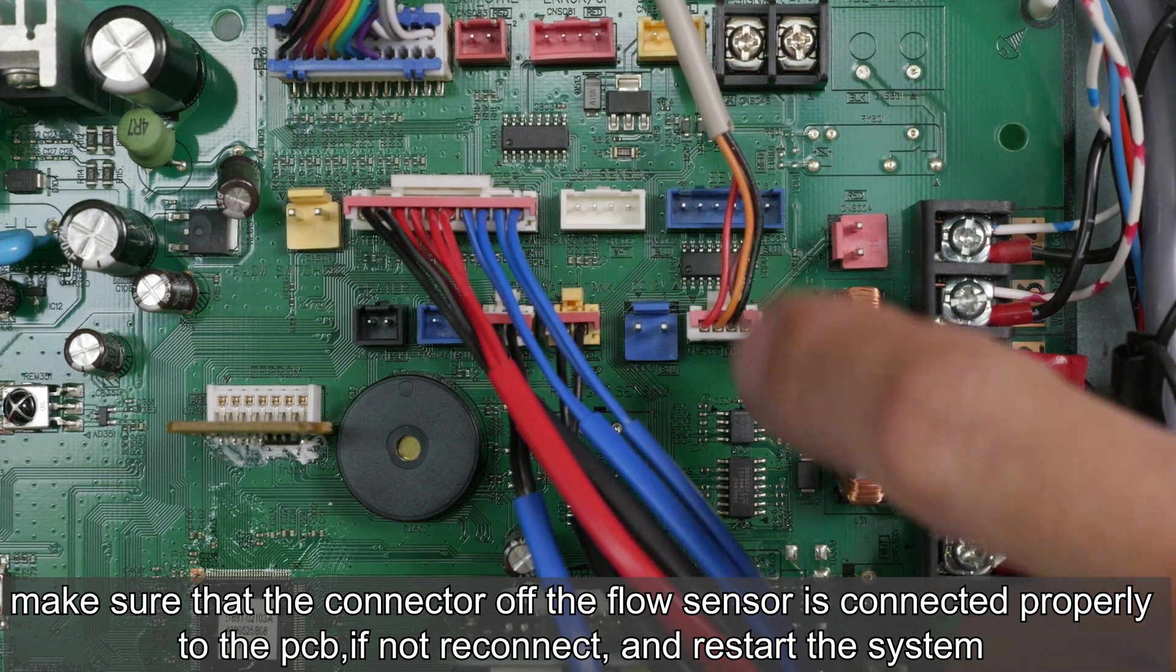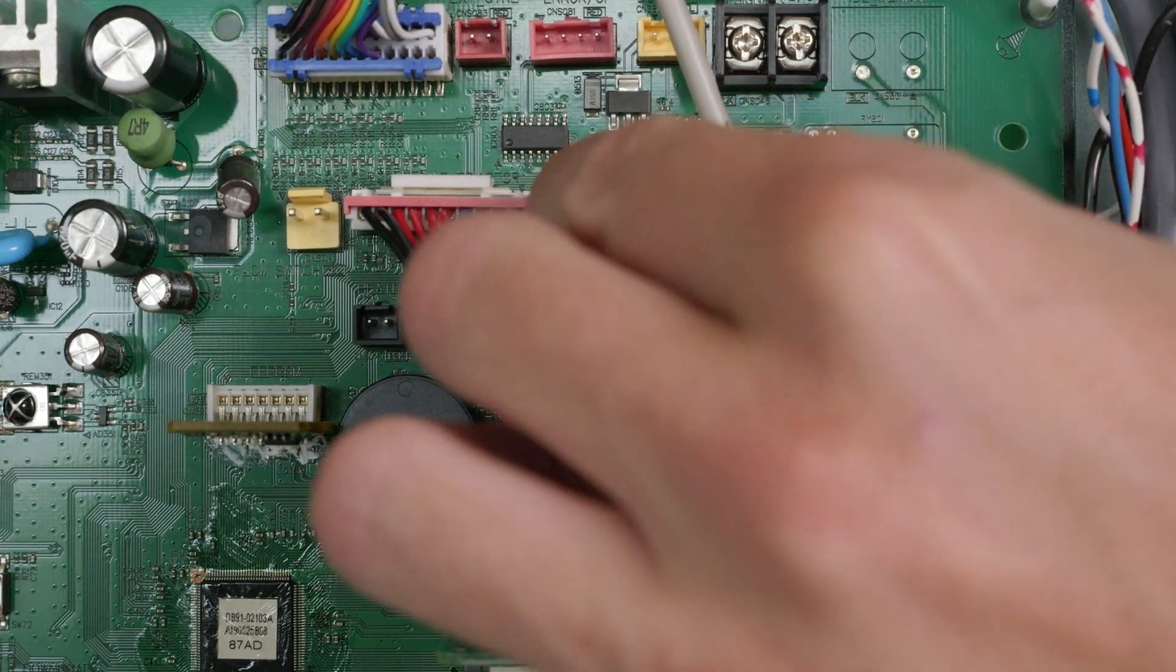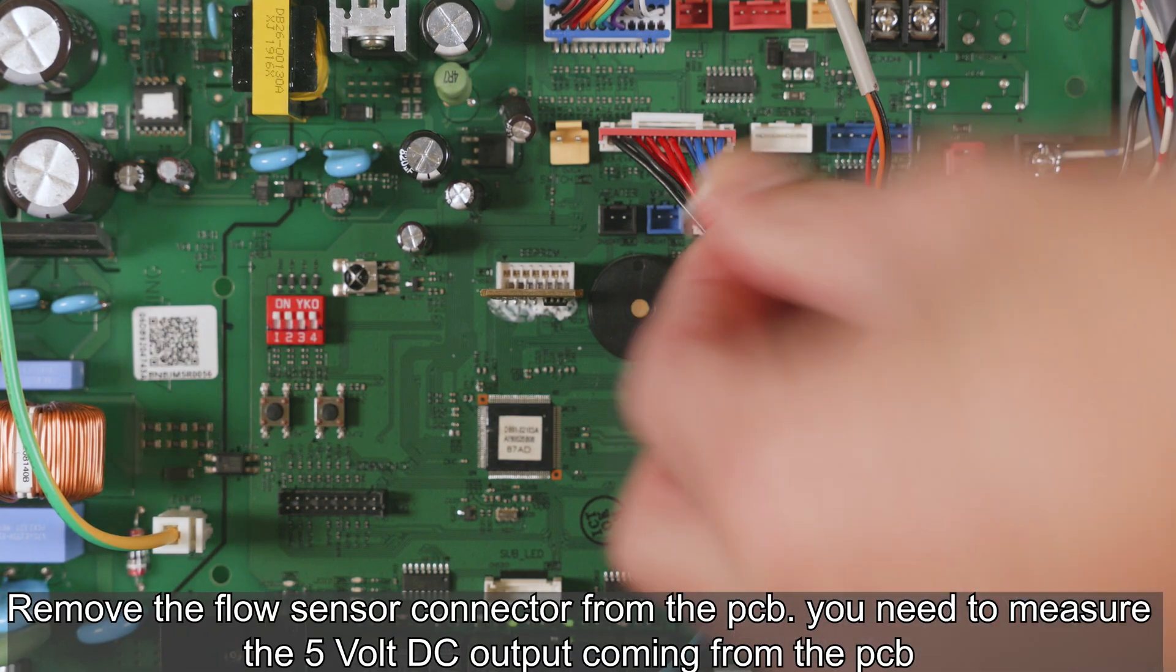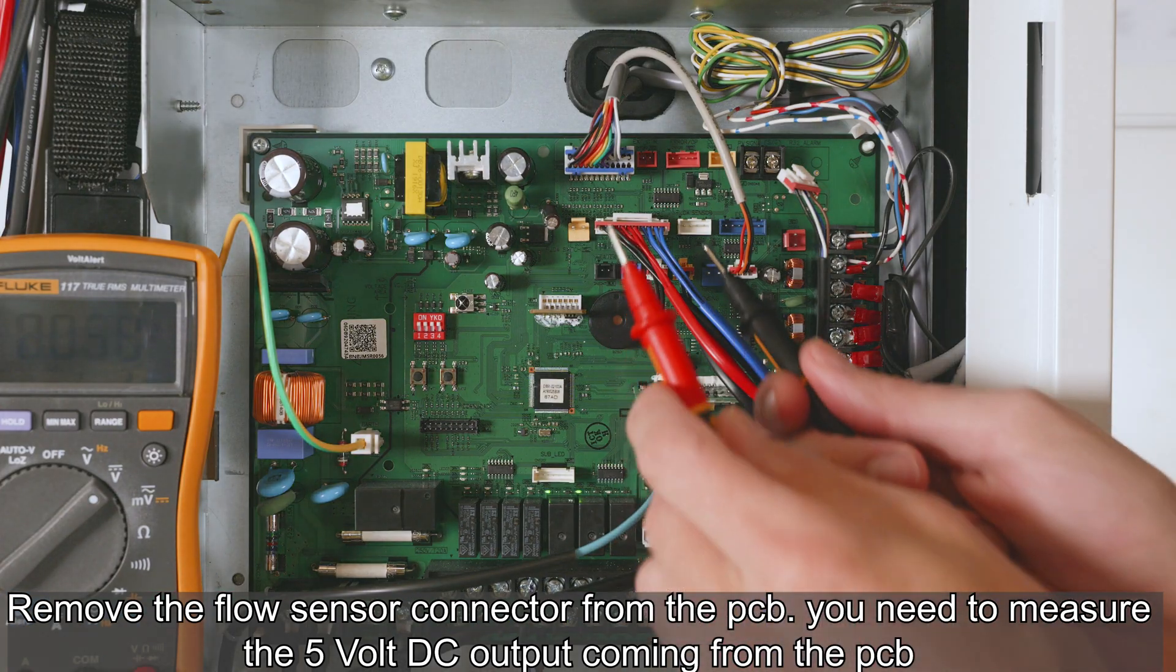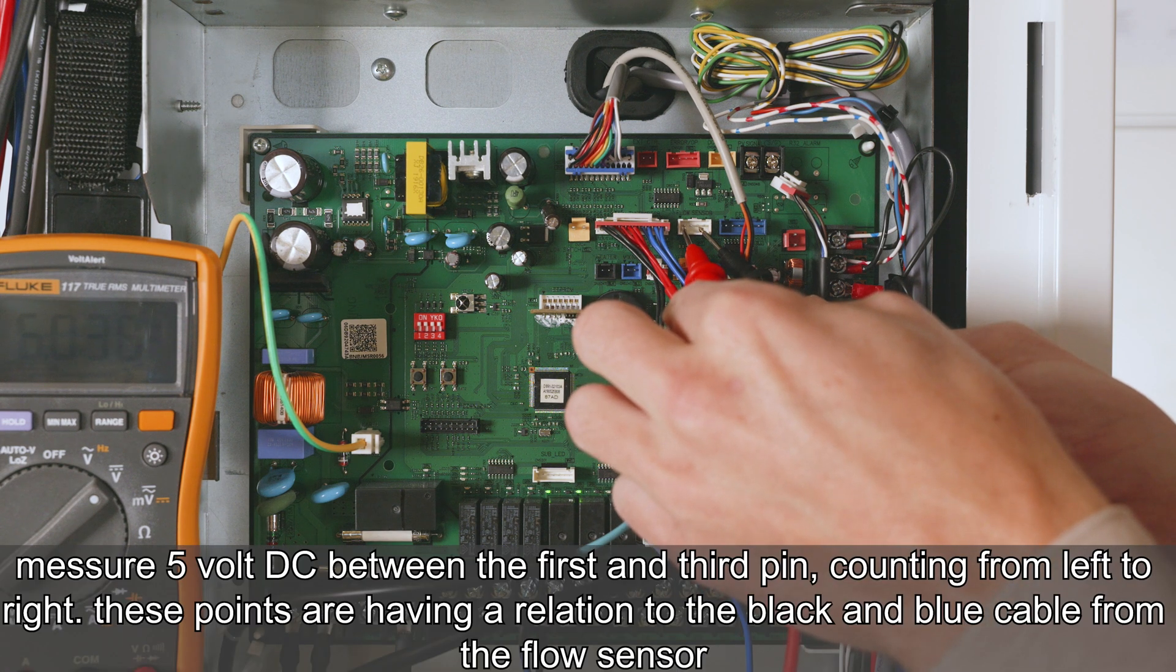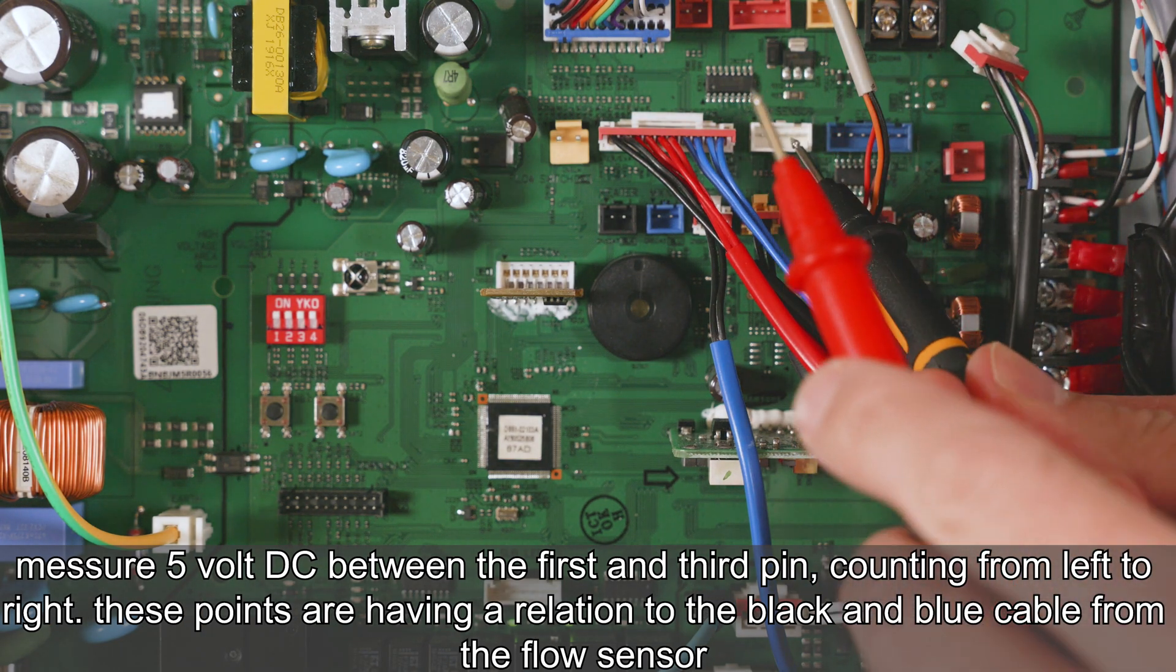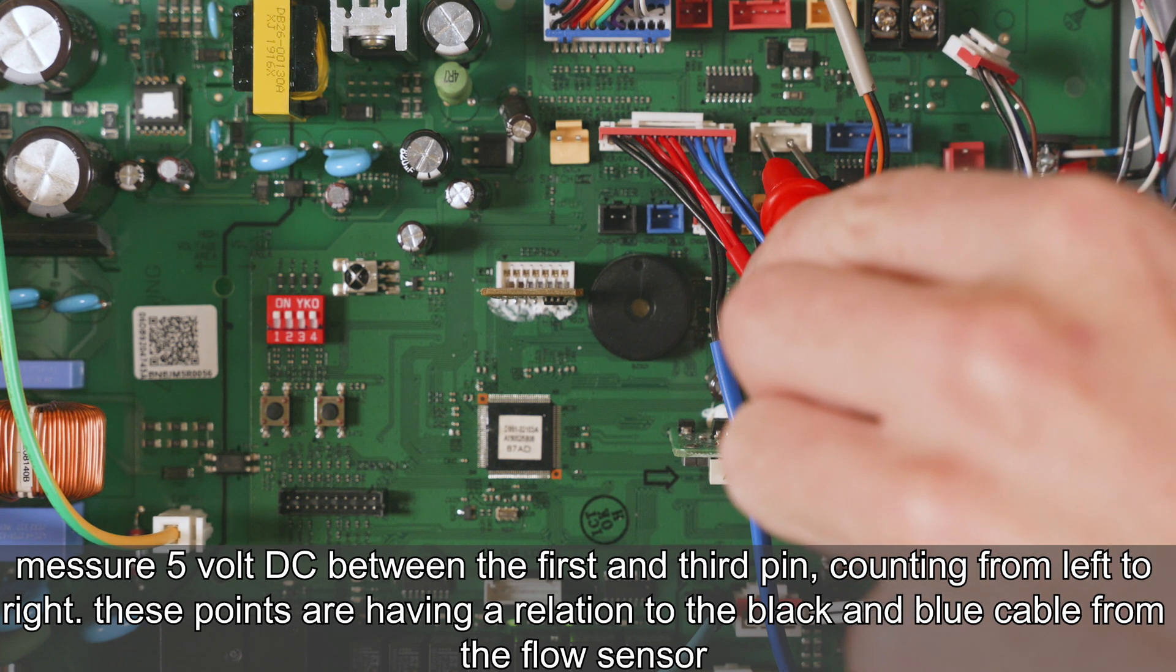Remove the flow sensor connector from the PCB. You need to measure the 5 volt DC output coming from the PCB. Measure 5 volt DC between the first and third pin counting from left to right. These points are having a relation to the black and blue cable from the flow sensor.